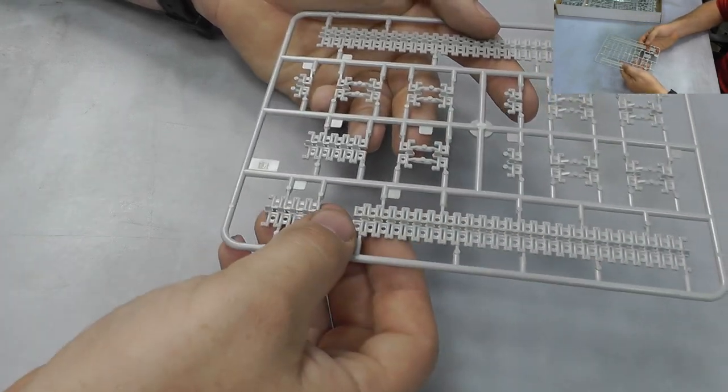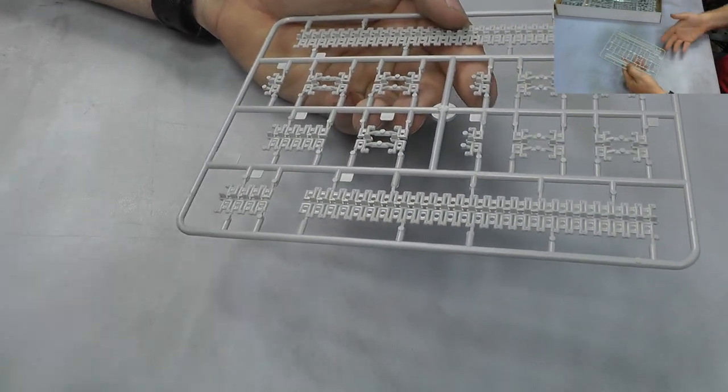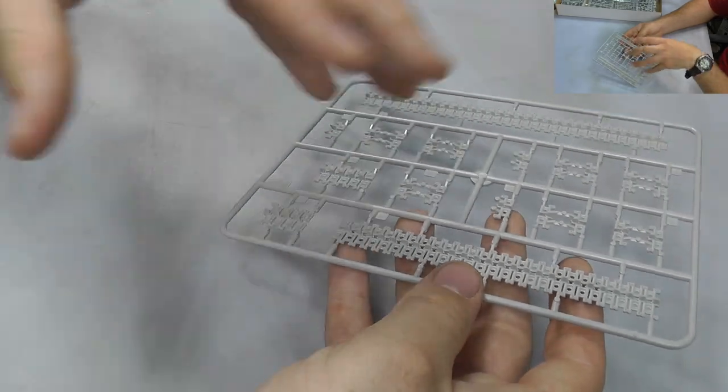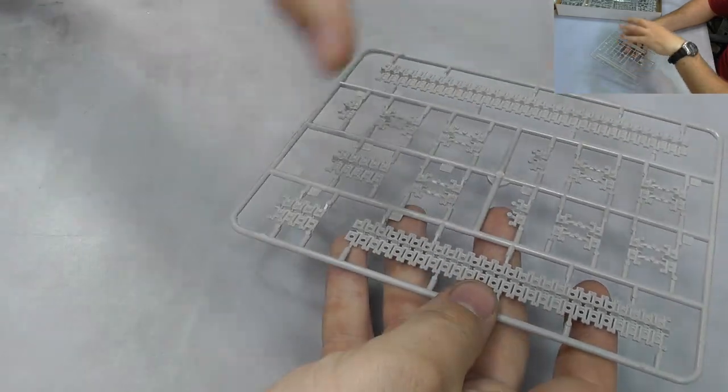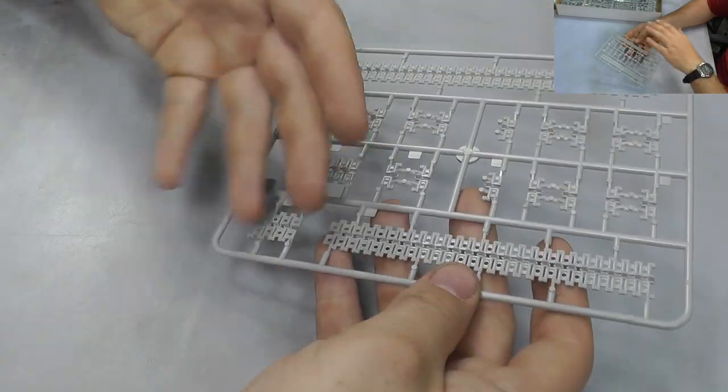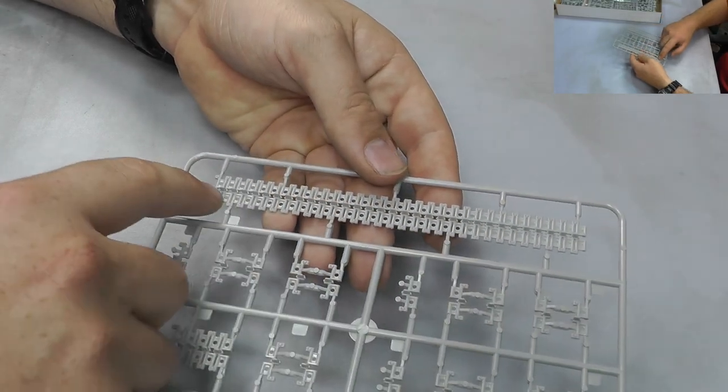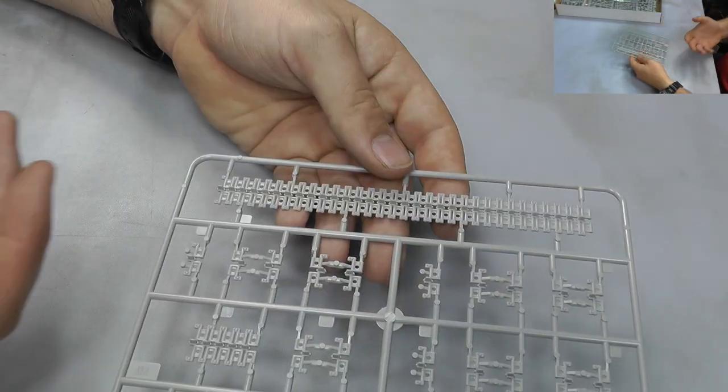That kind of gives you the problem if you want to put this tank on a diorama and you want to have it looking realistic. The tracks, it's not going to look realistic, especially the top. The top's going to be just nice and straight, there's going to be no sagging in it. So yeah, I personally don't like those kind of tracks.